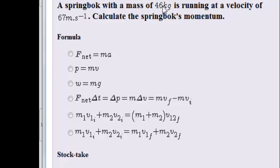A springbok with a mass of 46 kilograms is running at a velocity of 67 meters per second. Calculate the springbok's momentum.